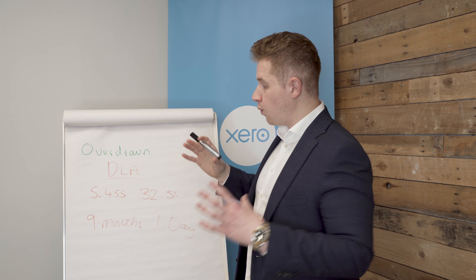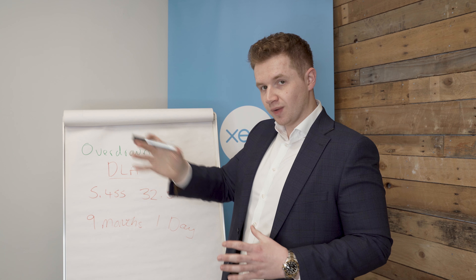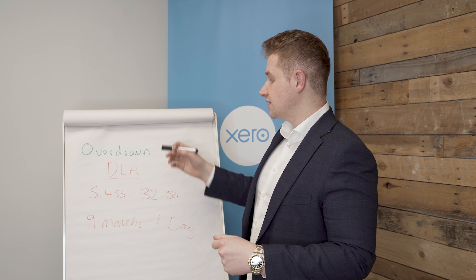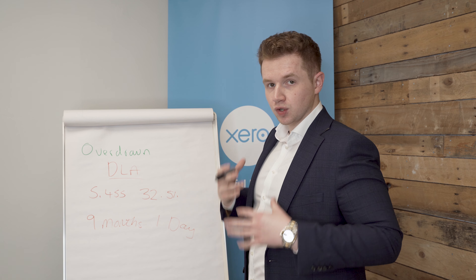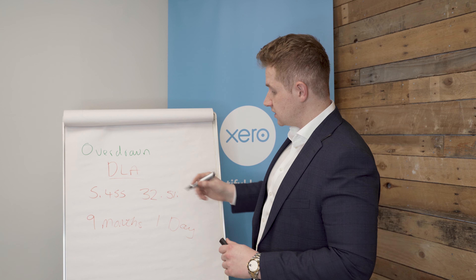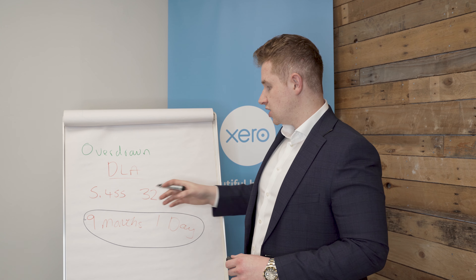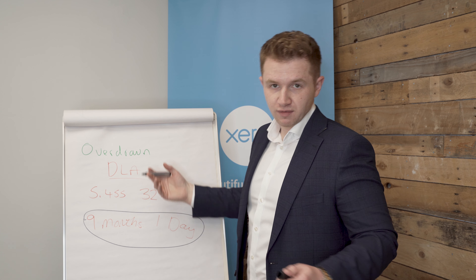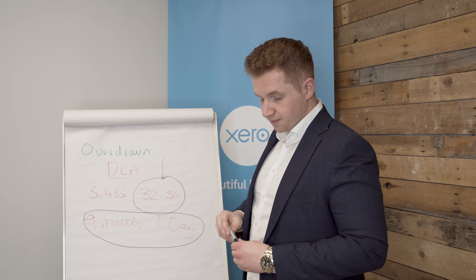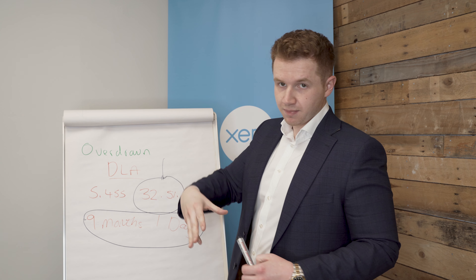So, overdrawn directors loan account — what does that mean? In the previous example the company owed you £80,000, but if it were the other way around — you're taking out more than you put in — then your directors loan account is overdrawn and you owe your limited company money. Broadly speaking, this is not a good position to be in, because if it's not repaid nine months and one day after the year end, HMRC will charge you Section 455 tax, which is 32.5% — a very steep amount — and you won't get that back until the directors loan account is repaid to the company.